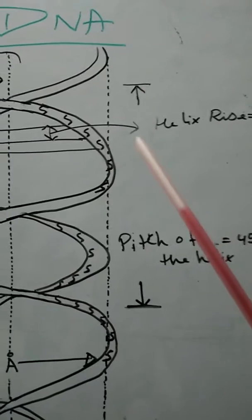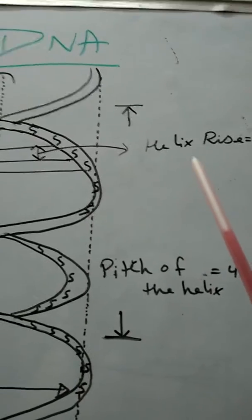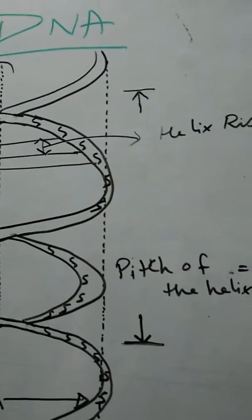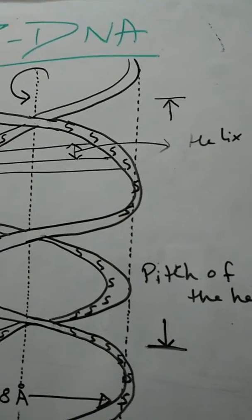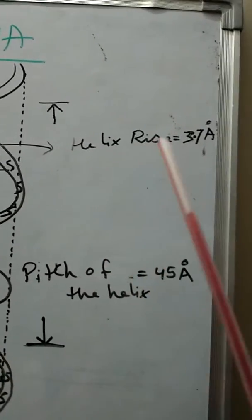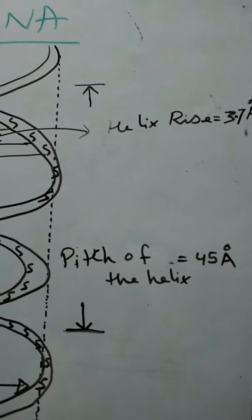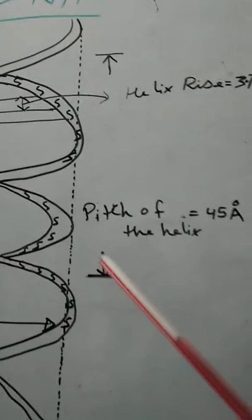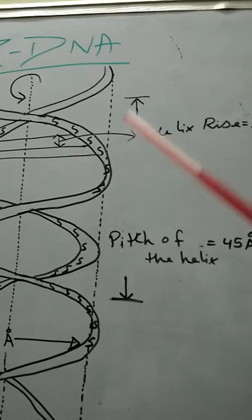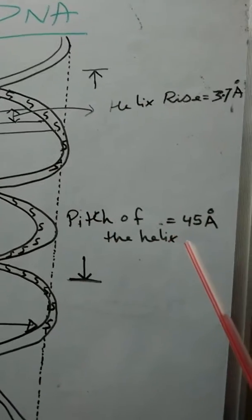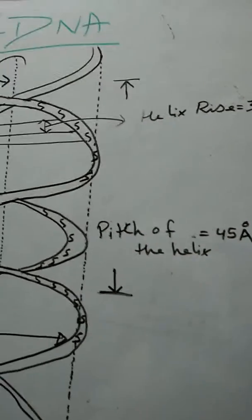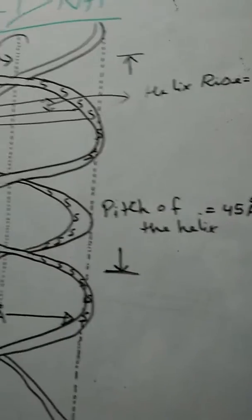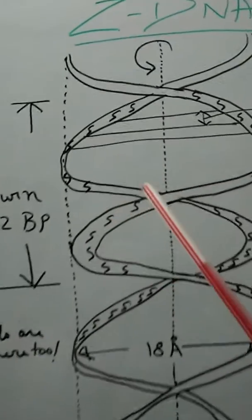Now helix rise, which is basically the distance between two base pairs or between two nucleotide pairs, is 3.7 angstroms. Now pitch of the helix, that is length of one complete turn, is 45 angstroms, but it was 34 angstroms in case of B-DNA.